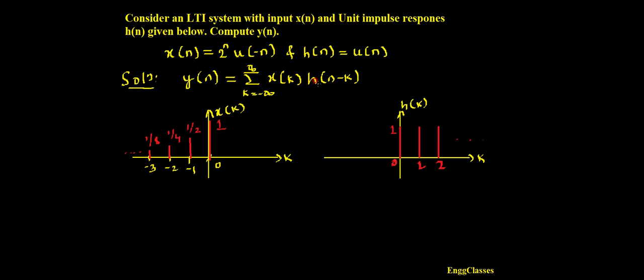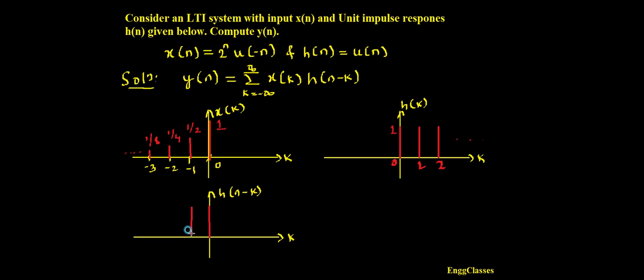Now I have to get h of n minus k. To obtain h of n minus k from h of k, I reflect the signal. The reflected signal h of n minus k is the mirror image of h of k. It exists till minus infinity with amplitude 1, at 0, minus 1, minus 2, and so on. Now I'm ready with both signals x of k and h of n minus k.